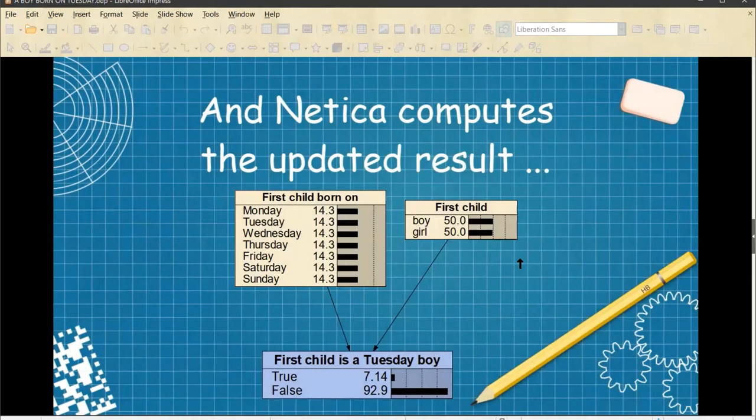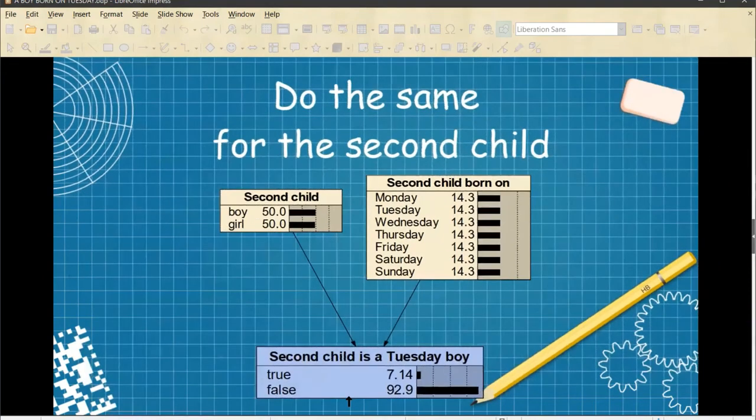And Nereka computes the updated result. Let's combine this and this. Now knowing what a Tuesday boy is, it gives me this as the updated probability. And likewise, for the second child. Moving on.